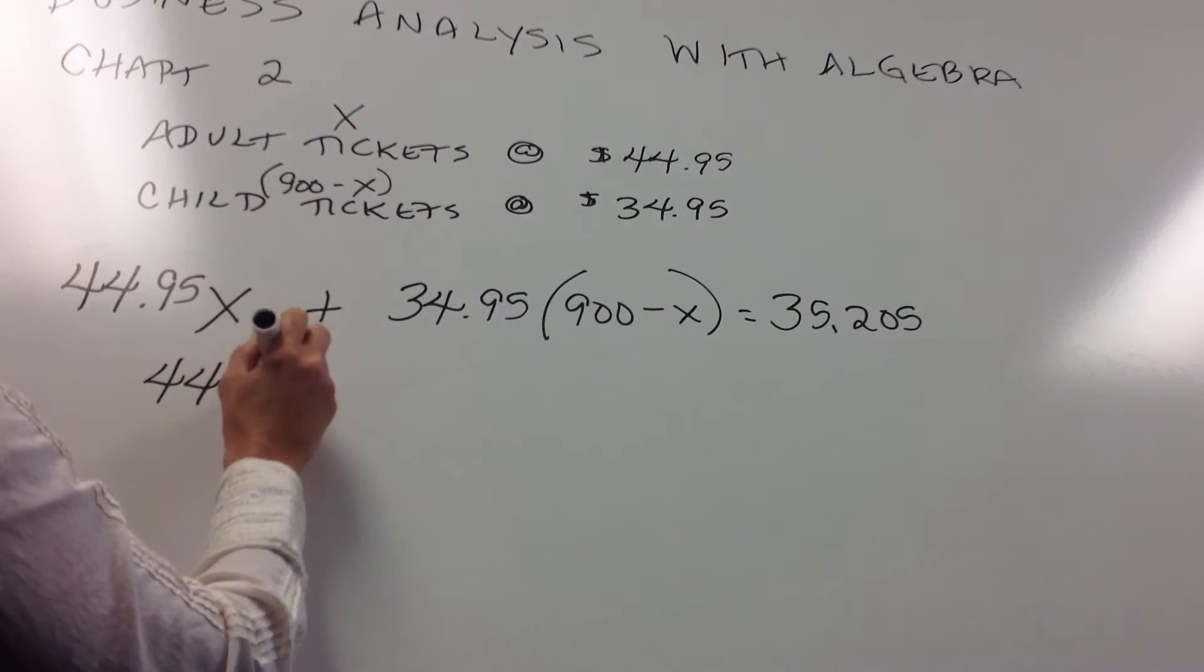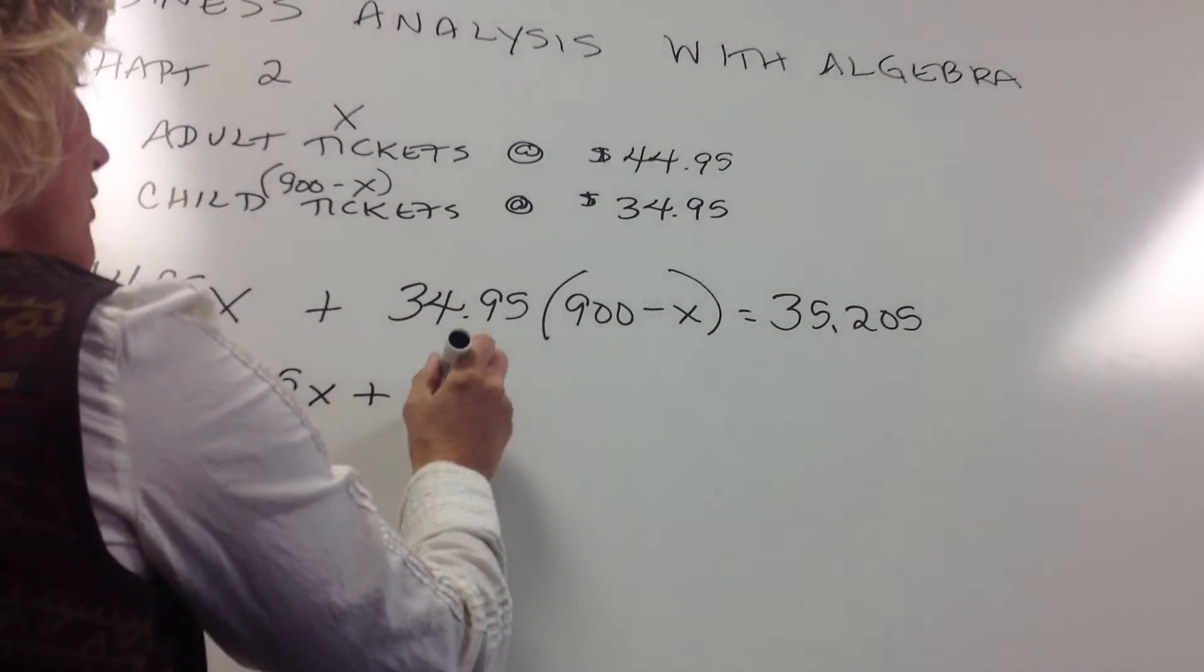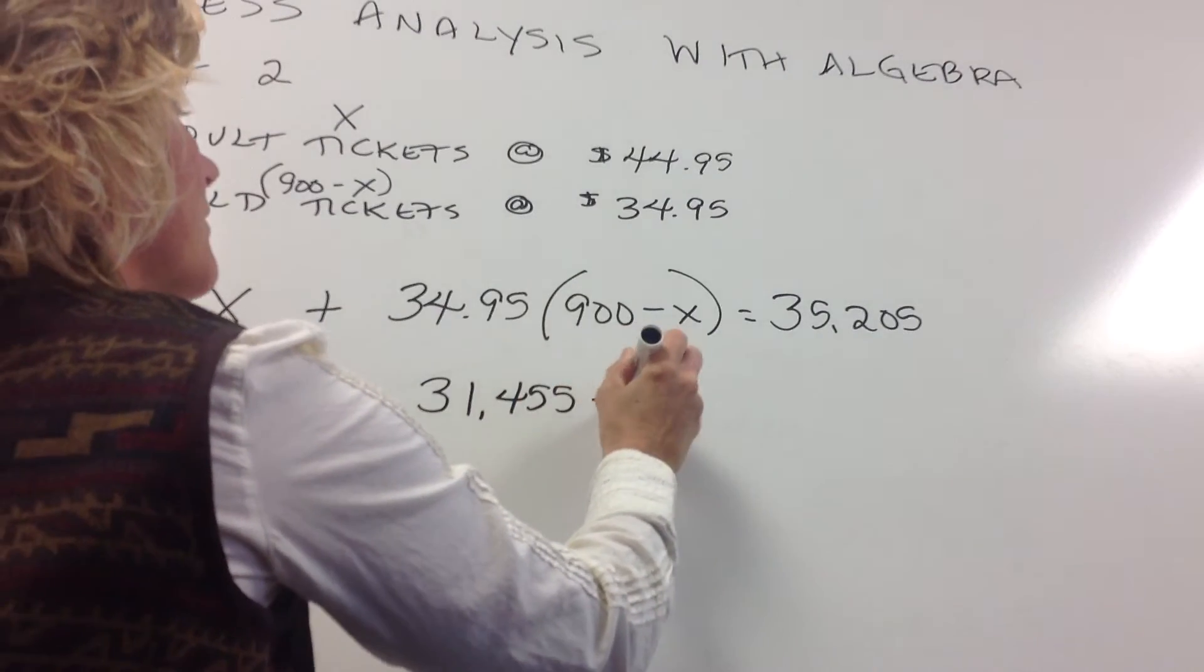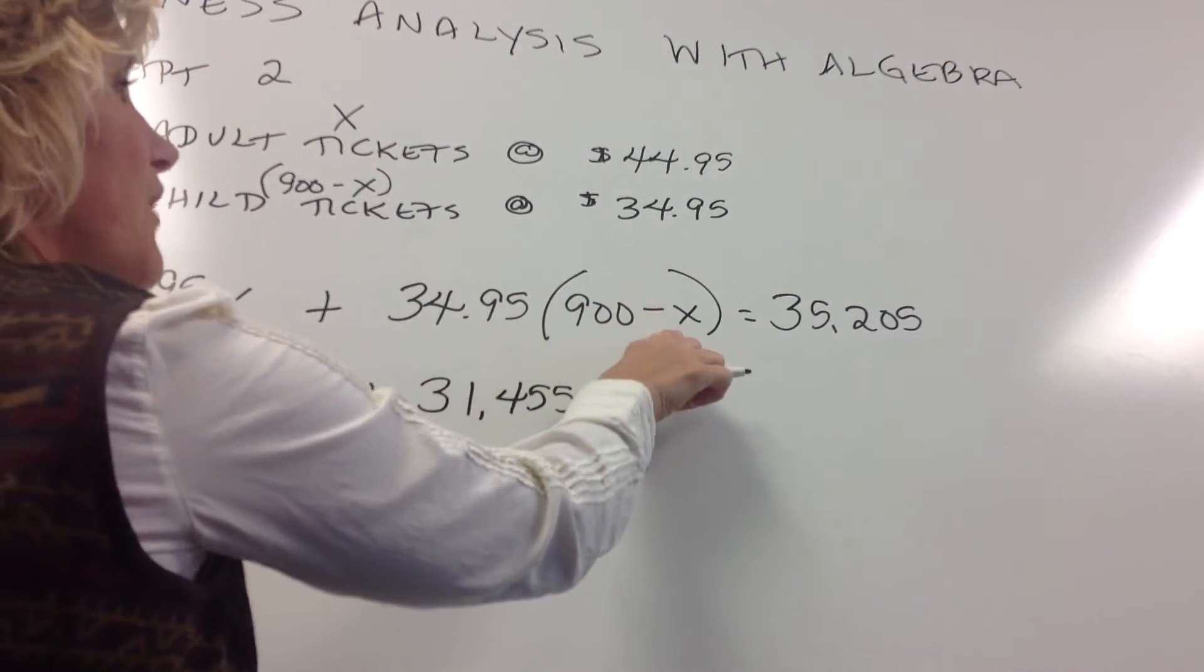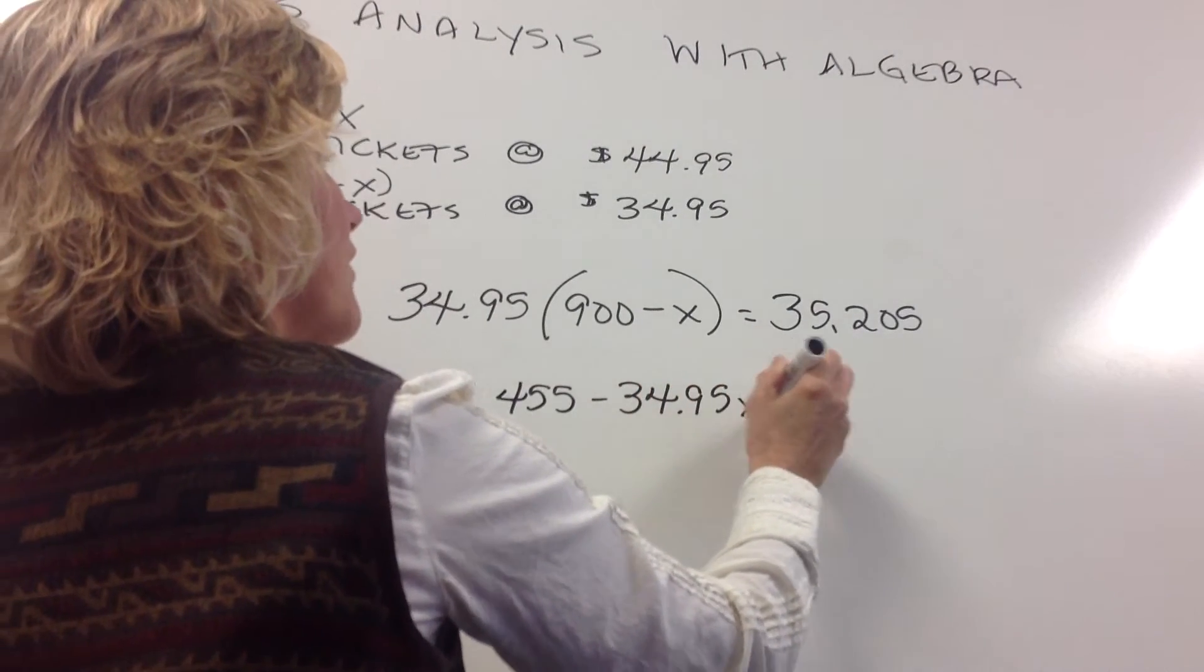So here we'll carry our $44.95X back down. If we take our $34.95 and we multiply that by 900, we get $31,455. And then $34.95 times the negative X gives us negative $34.95X.